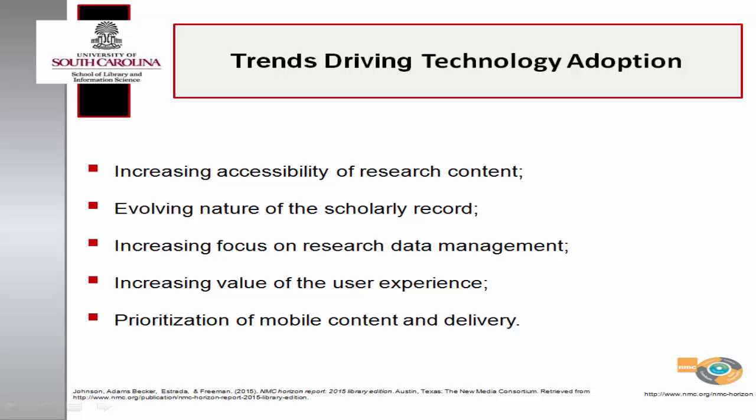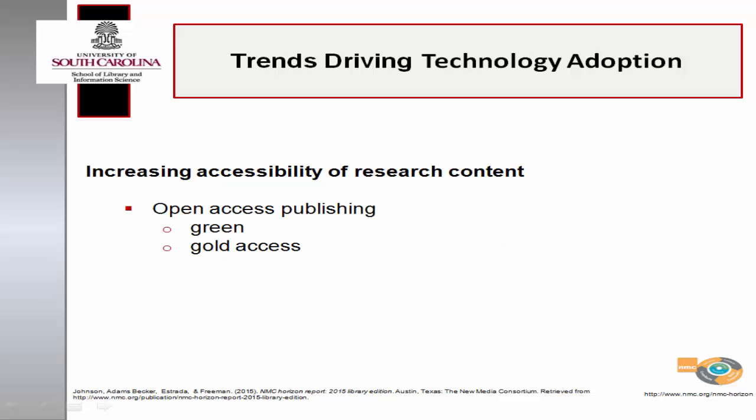Trends accelerating technological adoption in libraries include the increasing accessibility of research content, the evolving nature of the scholarly record, increasing focus on research data management, the increasing value of the user experience, and prioritization of mobile content and delivery. As the cost of collections and data management continues to rise, librarians are focused on finding or creating cost-effective means to increase access to scholarly materials. Open access publishing has emerged as a viable solution.